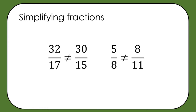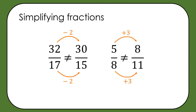The next point may seem obvious: 32 over 17 is not the same as 30 over 15 — 30 over 15 is 2, which is clearly different. Here we've taken away 2 from both numerator and denominator, and someone might say that's okay because they did the same thing to both. But it isn't okay — that only works for multiplication and division, not addition and subtraction. Similarly, adding 3 to both numerator and denominator also changes the fraction's value. This is not okay with numeric fractions, and it's not okay with algebraic fractions — the rules are the same.